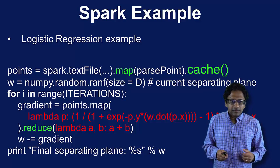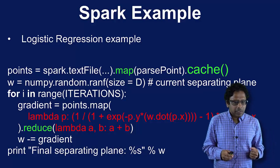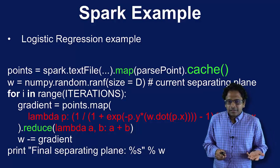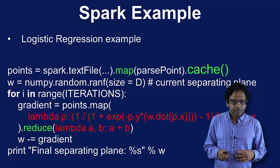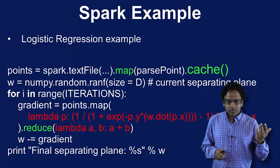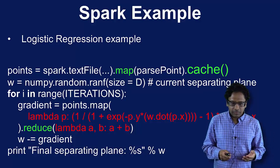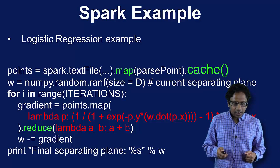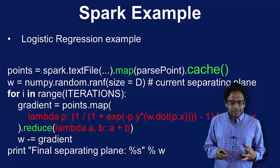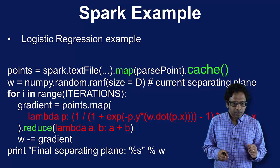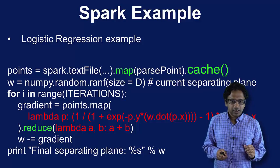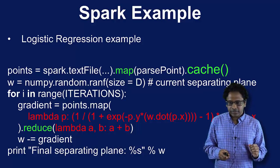Running this code — a standard example from the Spark site — it runs about 100x faster in Spark compared to Hadoop. There's a huge advantage in using memory. As mentioned, there will be a much longer Spark module coming up later in this class.